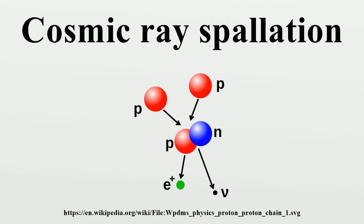Cosmic ray spallation is a form of naturally occurring nuclear fission and nucleosynthesis. It refers to the formation of elements from the impact of cosmic rays on an object.